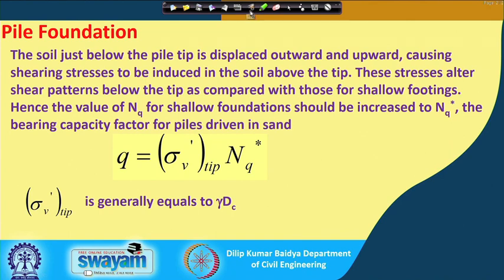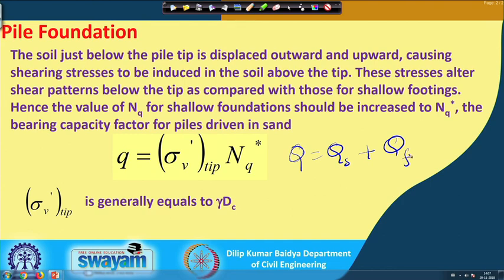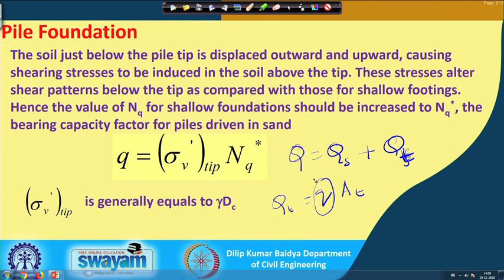We discussed that q equals qs plus qt, where qs means skin friction or friction component, and qt means tip resistance. Qt is nothing but q multiplied by base area. To find q - the bearing capacity at the base - we use the bearing capacity formula: c·Nc + γ·Df·Nq + 0.4·γ·B·Nγ (varying coefficient depending on strip, circular, or square footing).